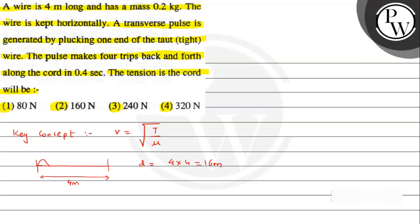We know velocity equals distance upon time. Using this result, we can calculate velocity as 16 upon 0.4. So this value comes out to be 40 meter per second.